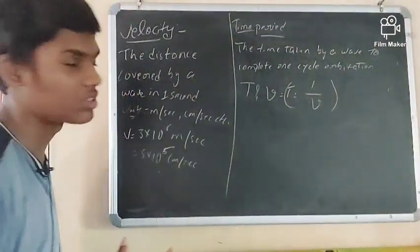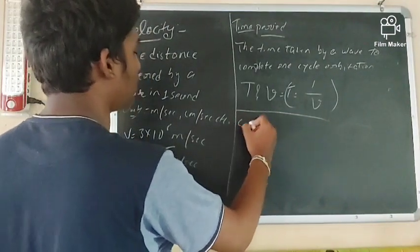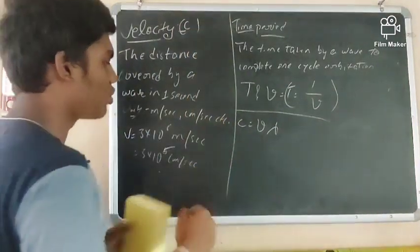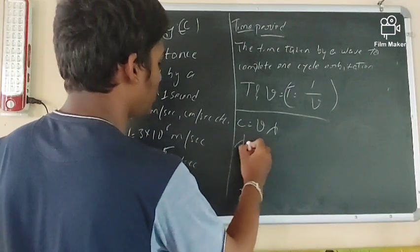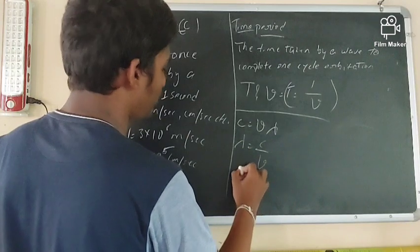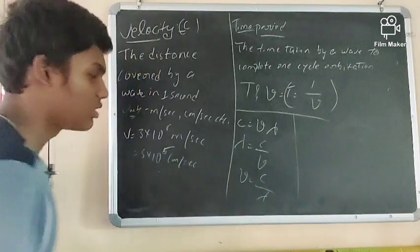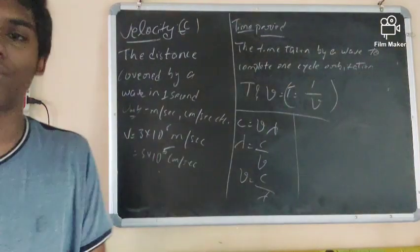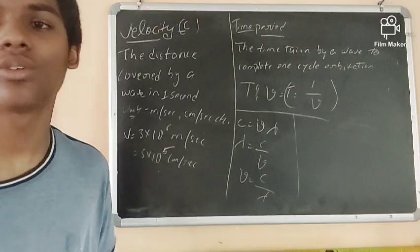Now let us see the basic formulas. C = ν × λ, which relates velocity to frequency and wavelength. From this, wavelength λ = C/ν, and frequency ν = C/λ. These are the basic formulas about the characteristics of electromagnetic waves. Thanks for watching — please like, share, and subscribe. See you in the next video.